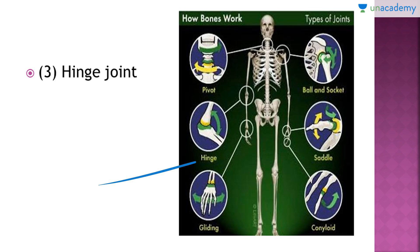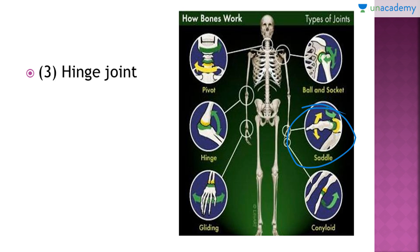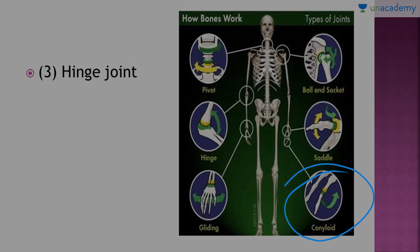Other types of joints include: pivot joint, present in the neck region; ball and socket joint, present between the humerus and scapula and also between the femur and pelvic girdle; saddle joint, present between the thumb and metacarpal; condyloid joint, present between the phalanges of the hand; and gliding joint, present between the carpals.